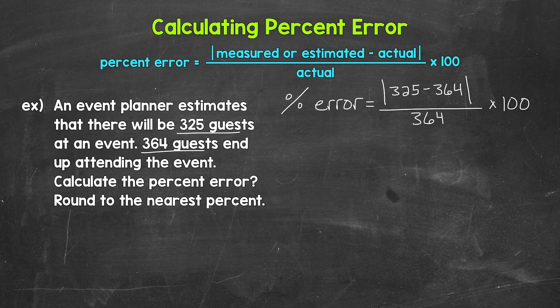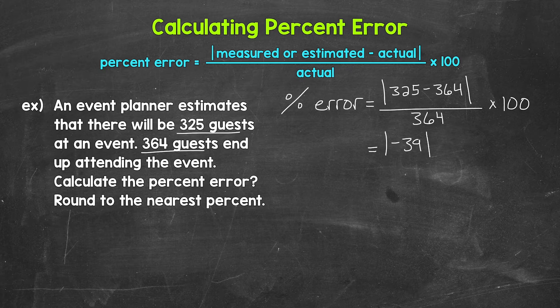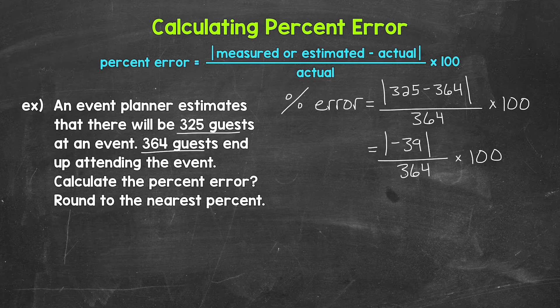So 325 minus 364. That gives us negative 39 divided by 364 times 100. Now we need the absolute value of negative 39. That's 39, positive 39.